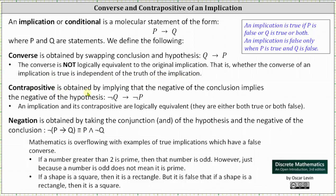The contrapositive is obtained by implying that the negative or negation of the conclusion implies the negative or negation of the hypothesis. The contrapositive is if not Q then not P. An implication and its contrapositive are logically equivalent, meaning they are either both true or both false.